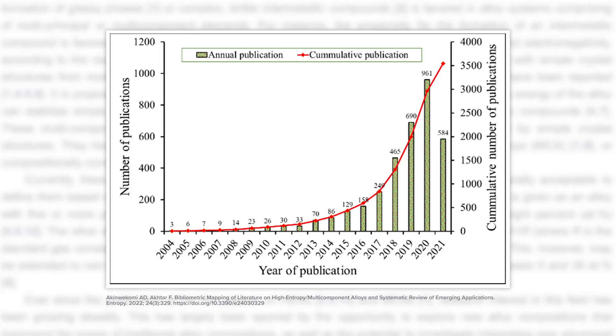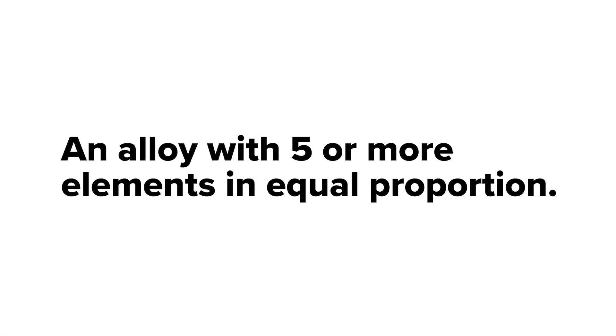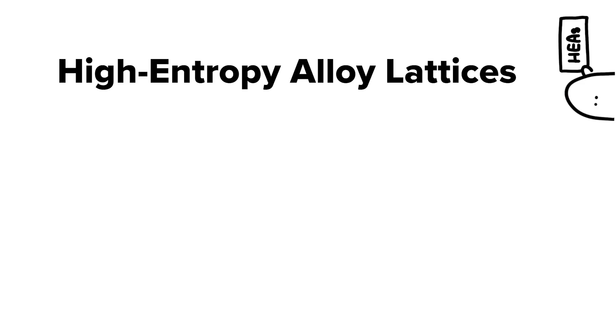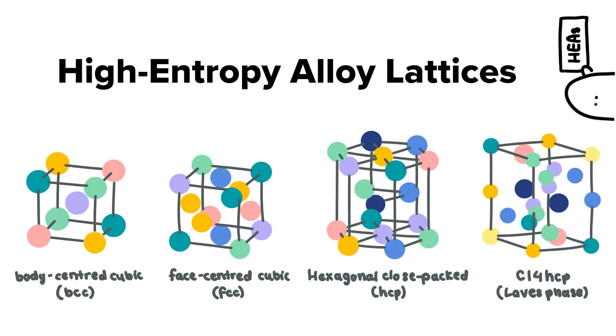Now, that brings us to high entropy alloys — a relatively new and exciting material defined as an alloy with five or more elements in equal atomic proportion. But wait, what about intermetallics? Isn't having so many elements in equal quantities a sure way to cause clumping? Surprisingly, no. On the contrary, for some groups of elements, it actually creates organized lattice structures of a solid solution.